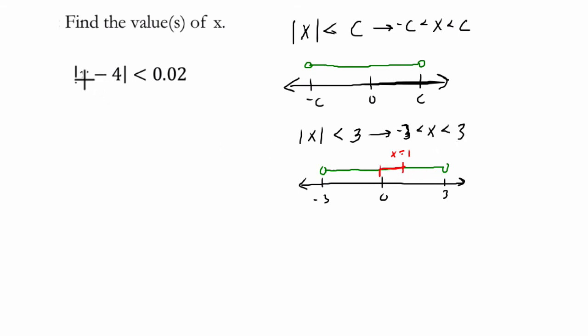So here we can say that x minus 4 is between negative 0.02 and 0.02. And then we just solve for x.